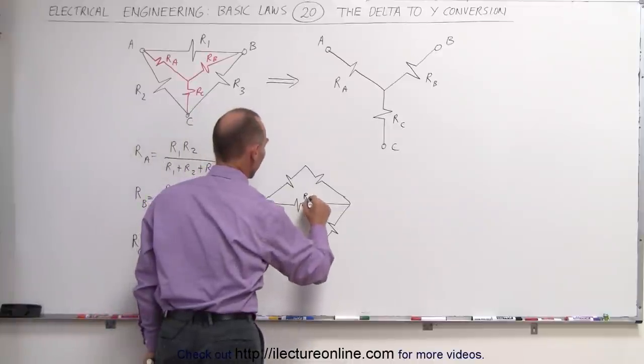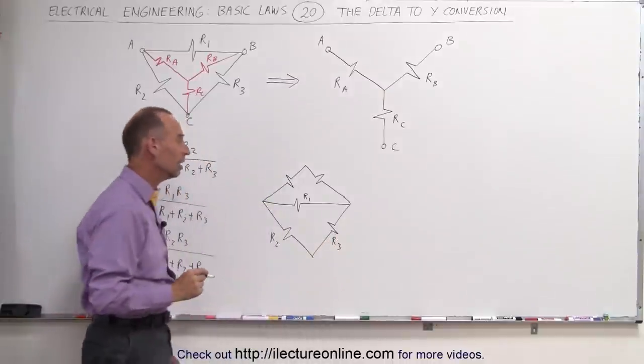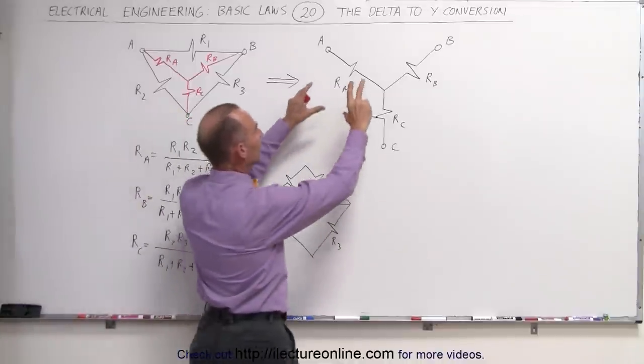This can be considered R1, this can be considered R2, this can be considered R3, which means we can pull this out of that circuit and replace it by that one.